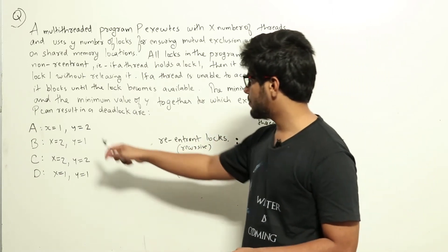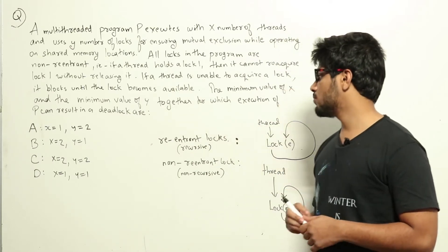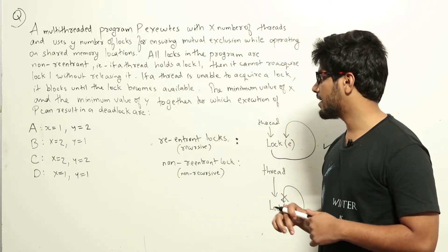A: X equals 1, Y equals 2. B: X equals 2, Y equals 1. C: X equals 2, Y equals 2. And D: X equals 1, Y equals 1.